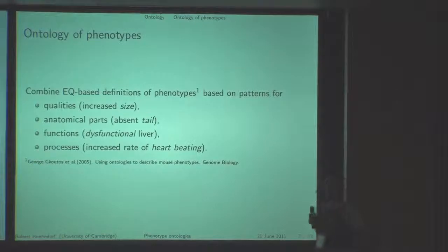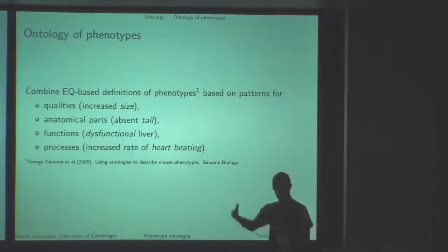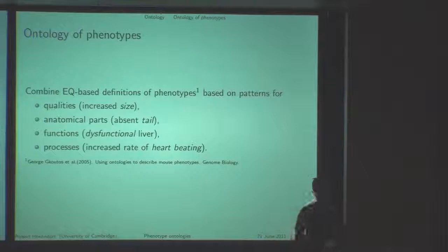There's a little bit more, and it's a bit hidden in this paper by George Gkoutos. There's an entity-quality way of describing phenotypes based on the entity which is affected in such a phenotype—maybe an anatomical structure, but it may also be a function or a process—and the quality which says how this entity is affected.